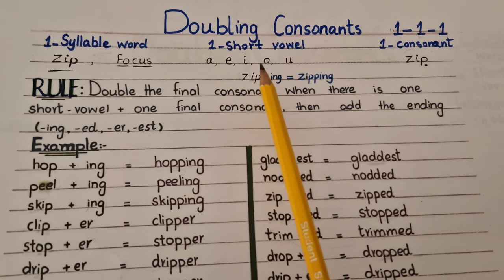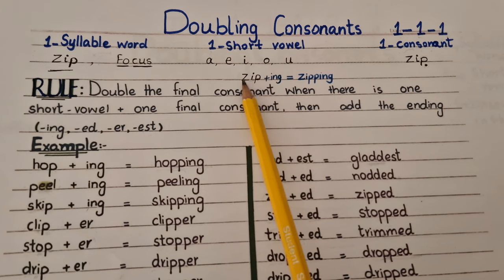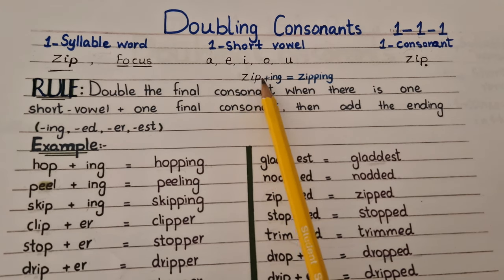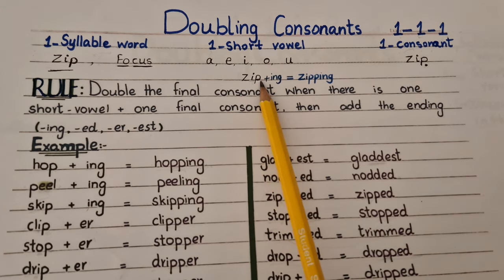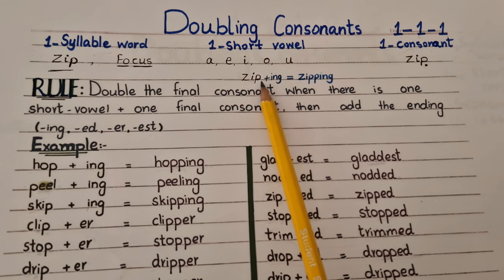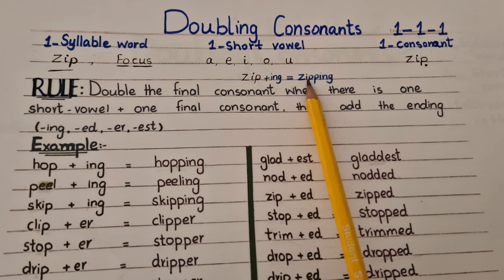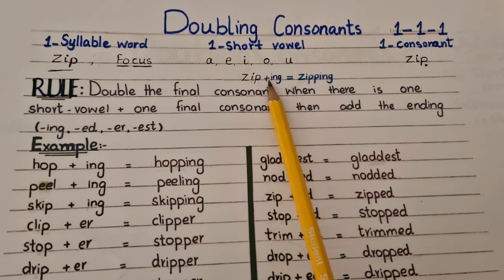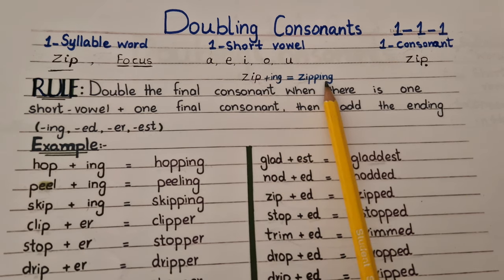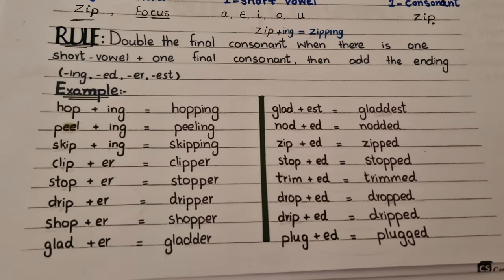And 'zip' has one short vowel sound — I — and a final consonant. When we add a suffix at the end of the word, then we will double the final consonant. 'Zip' becomes 'zipping'. Let's look at some more examples.